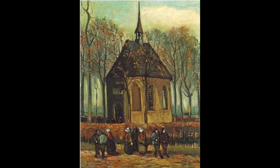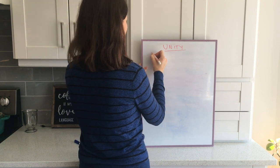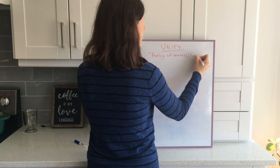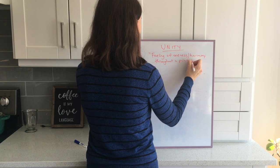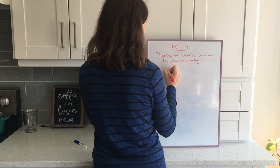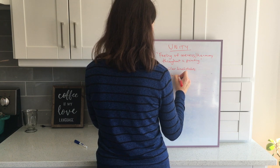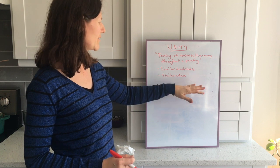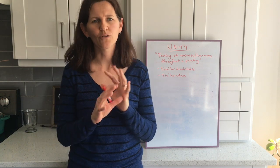Now we're going to move on to unity, the second principle of design. Unity is described as a feeling of oneness and harmony throughout the painting. There are different ways that an artist unifies a work of art - one of the ways is similar brush strokes throughout the painting, and another is similar colors throughout the painting, rather than using a whole variety of different kinds.